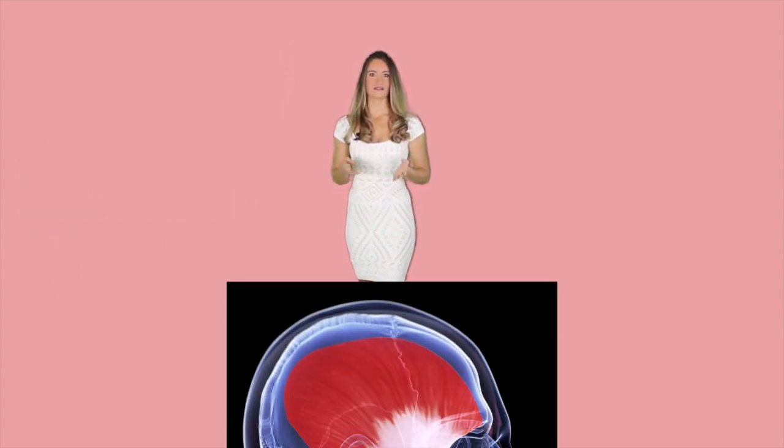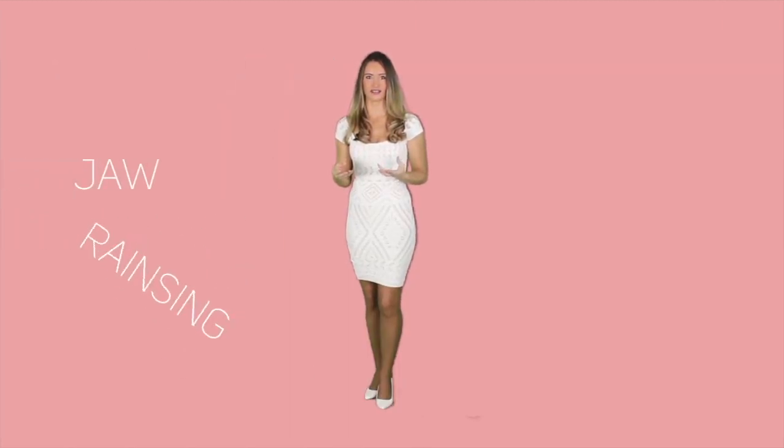Temporalis is the next muscle we're going to look at. It has a fan shape with an anatomical location on the temporal side of the skull, superior and anterior to the ears. It causes the jaw-raising motion and is attached all the way down to the mandible.